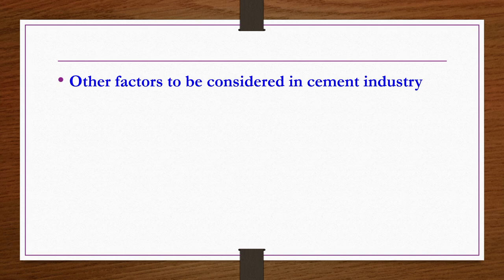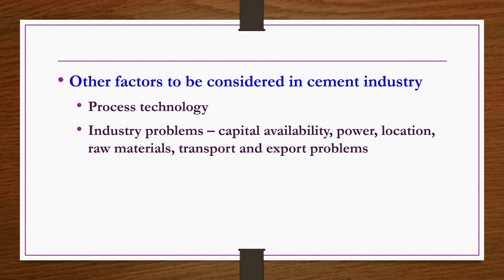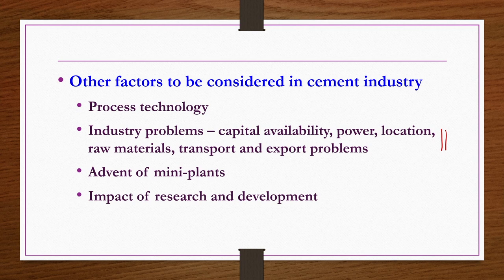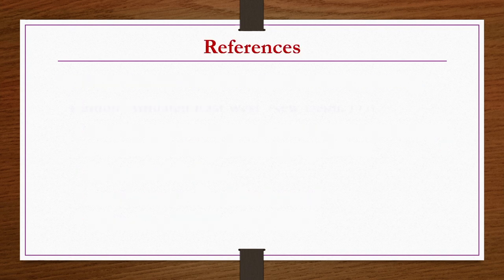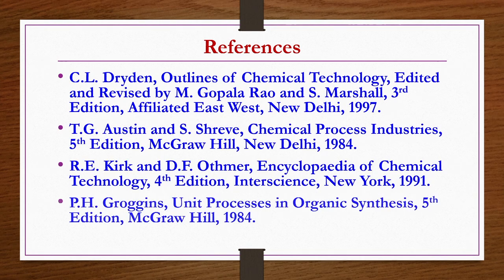Other factors to consider in the cement industry include process technology, industry problems such as capital availability, power, location, raw materials, transport and export problems. The advent of mini plants, impact of research and development, and future market influences and trends are also very important considerations for anyone operating in this high-turnage, low-margin industry.